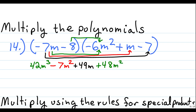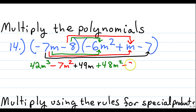Now we're ready to distribute the negative 8 to our second term, which is m. Negative 8 times 1 makes negative 8, or minus 8. We have an m here but no m to multiply it to, so it's m times 1, which is just m to the first degree.